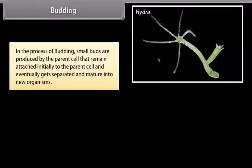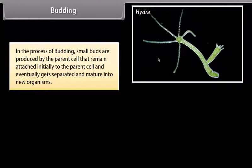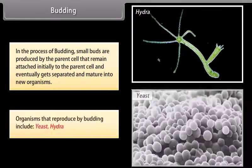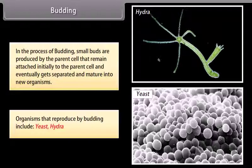In the process of budding, small buds are produced by the parent cell that remain attached initially to the parent cell and eventually get separated and mature into new organisms. Organisms that reproduce by budding include yeast and hydra. The following diagram shows a bud developing on a parent hydra.